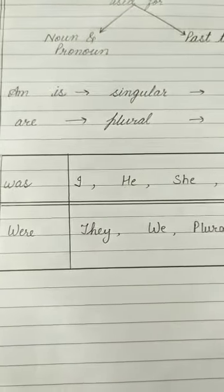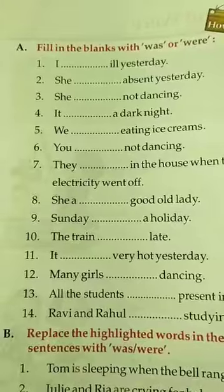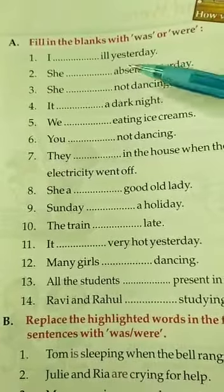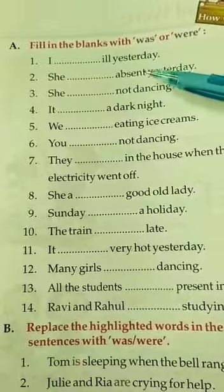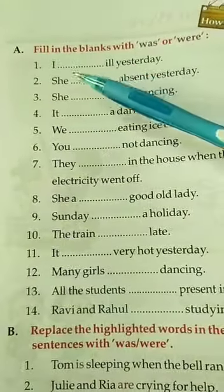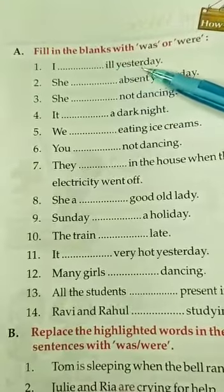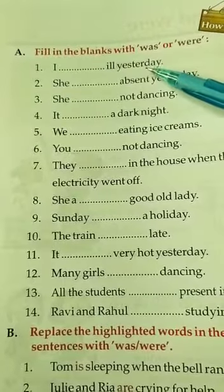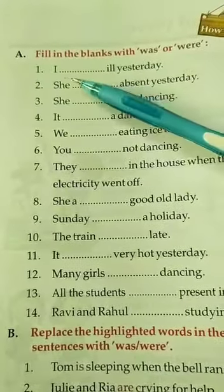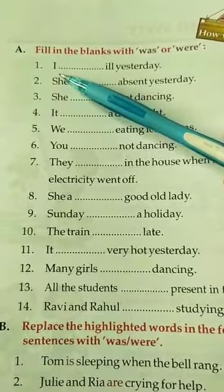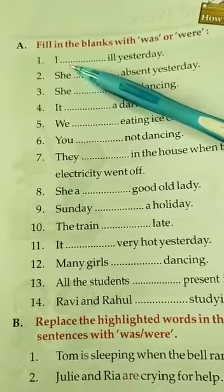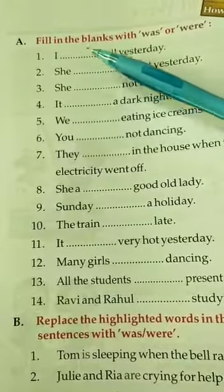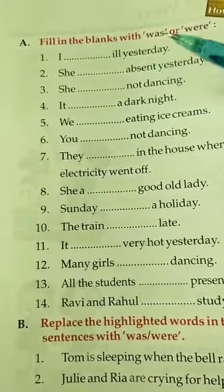Now let's see a few examples of 'was' and 'were'. The first question asks you to fill in the blanks with 'was' or 'were'. First question: 'I ___ ill yesterday.' Here 'yesterday' tells us it is past tense. The pronoun given is 'I', which is singular, so we always use 'was' with 'I'. Answer: I was ill yesterday.